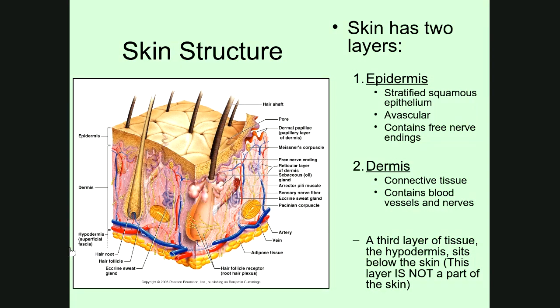The first thing you should know about skin is it has two layers. You can see these layers labeled over here on this diagram. The first one is what's known as the epidermis — the upper layer. It has a jagged boundary between the epidermis and what's below it, the dermis, which increases the surface area between the two layers and helps to bind them together.